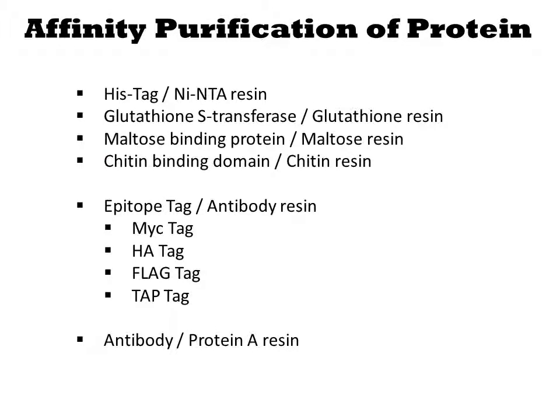HISTAG is just one of a suite of affinity purification techniques you can use. For HISTAG, the resin is nickel NTA. Glutathione S-transferase, maltose binding protein, and chitin binding protein are small E. coli proteins that have commercially available resins as well.